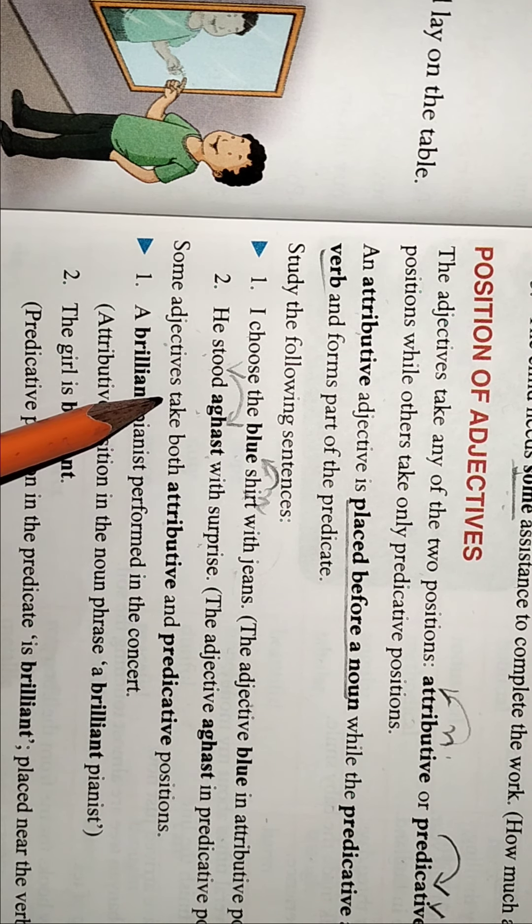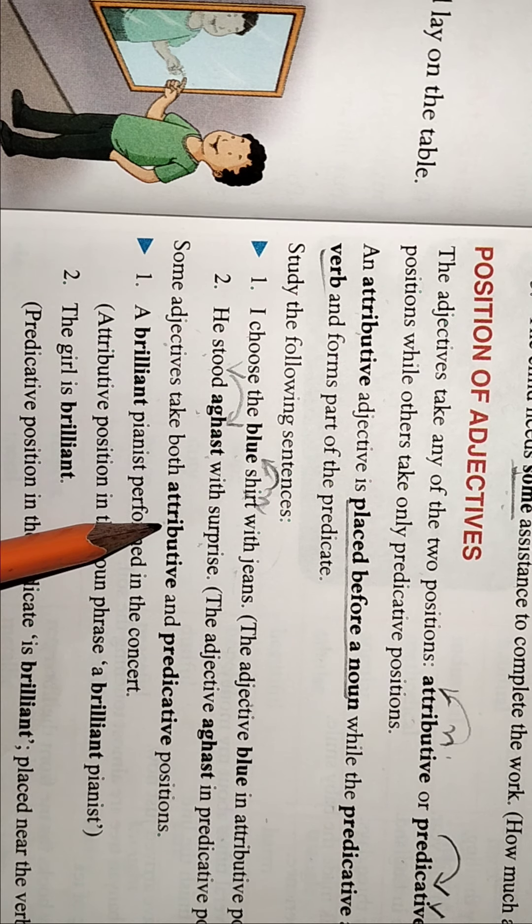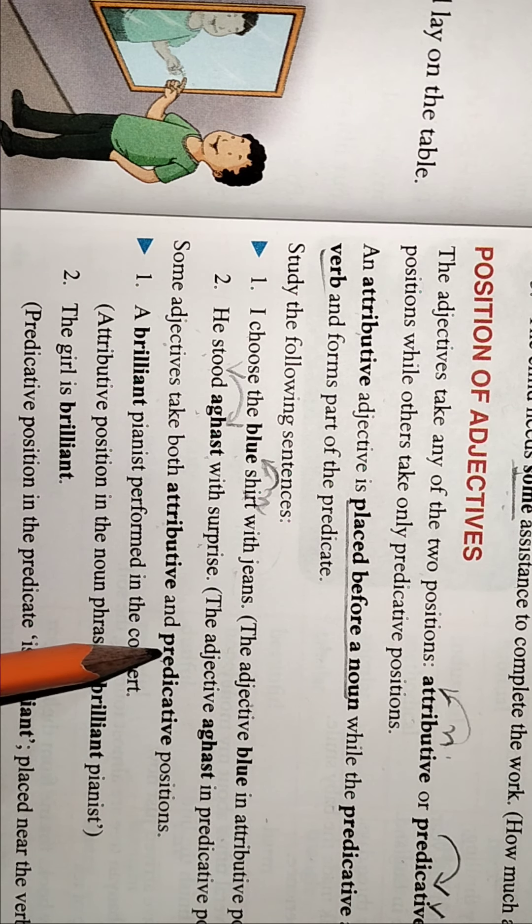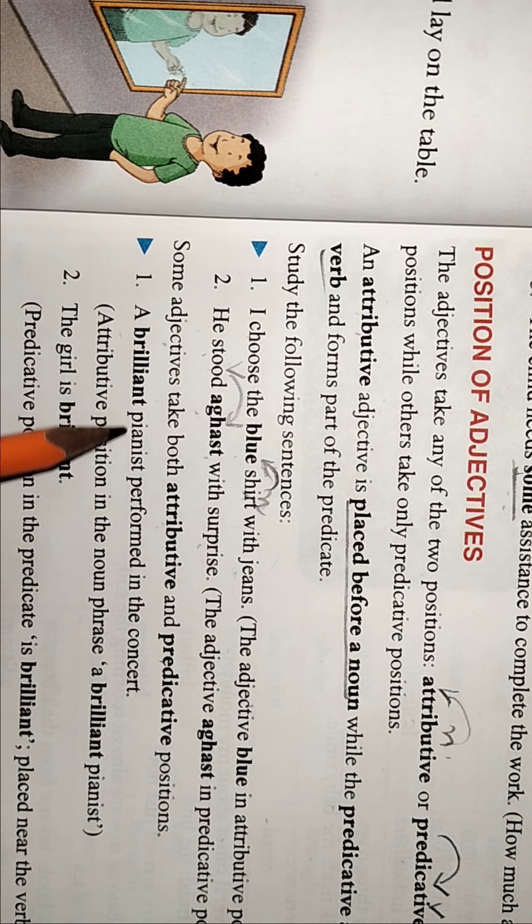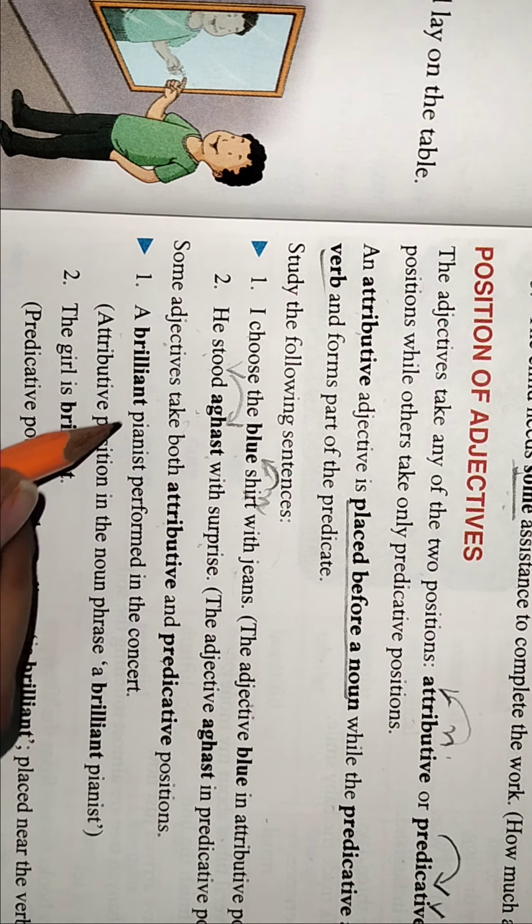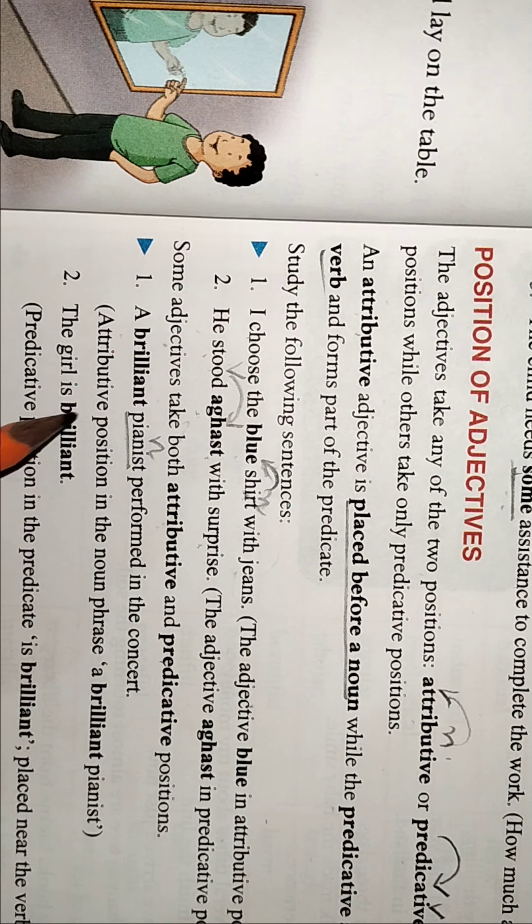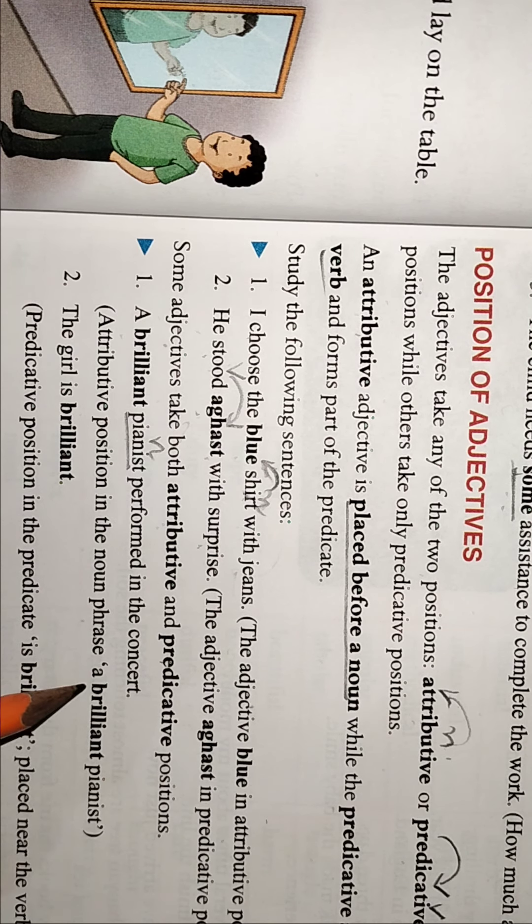But there are some adjectives that take both attributive and predicative, like a brilliant pianist. Now here pianist is a noun, brilliant attributive in the phrase a brilliant pianist.